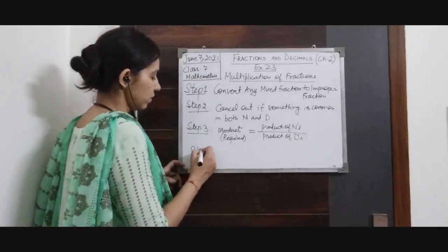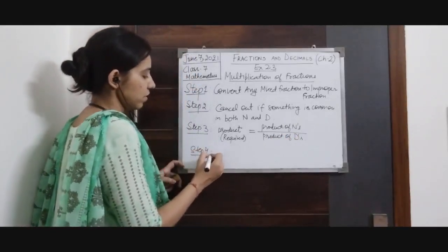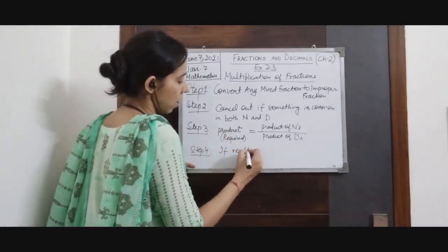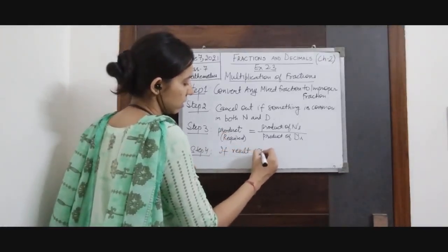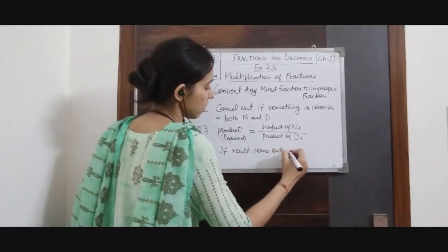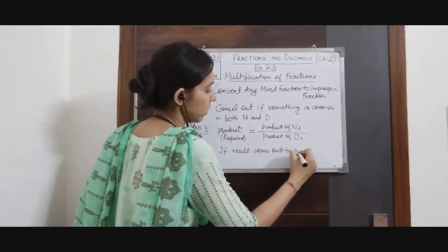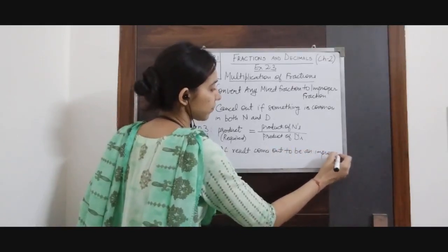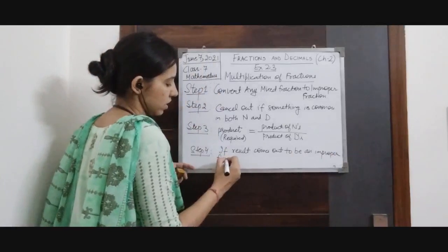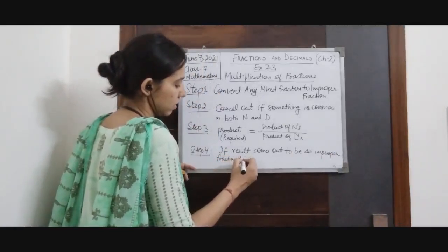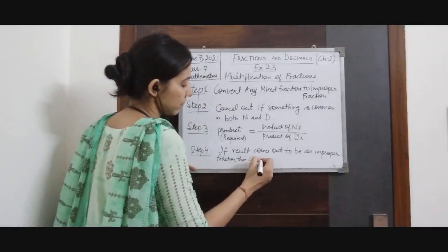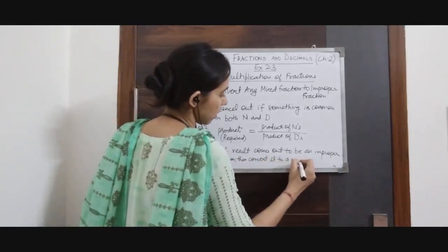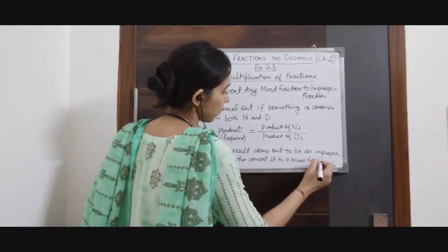Step 4 is: if the result or product comes out to be an improper fraction, then convert it to a mixed fraction.